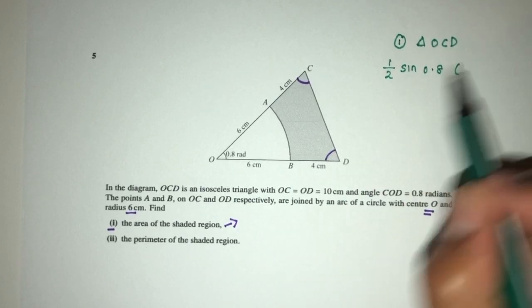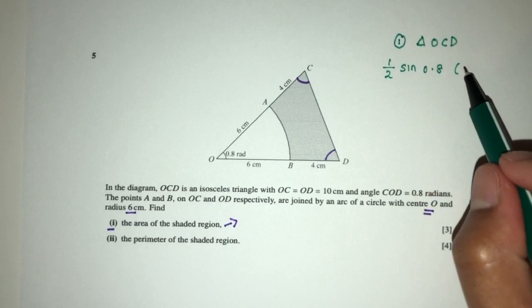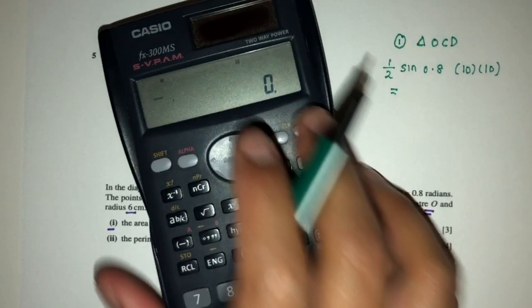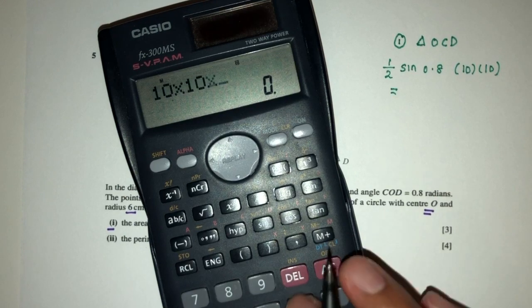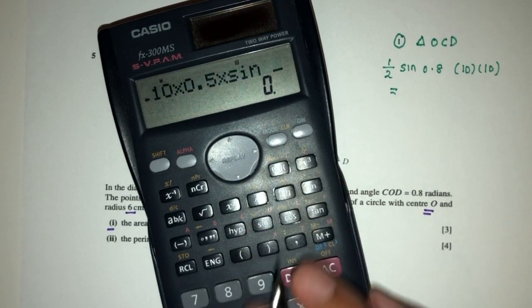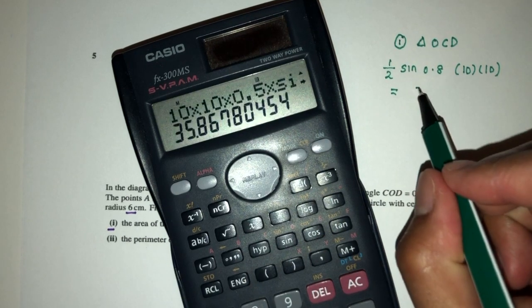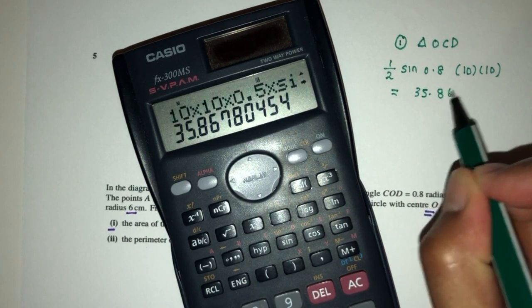which is 0.8, and times the two sides around the angle, that will be 10 times 10. 10 times 10 times 0.5 times sine of 0.8. So here we have to use radians. That will be 35.8678.